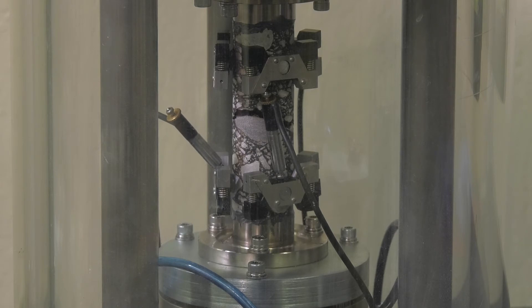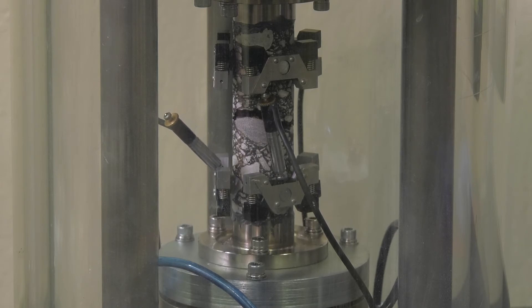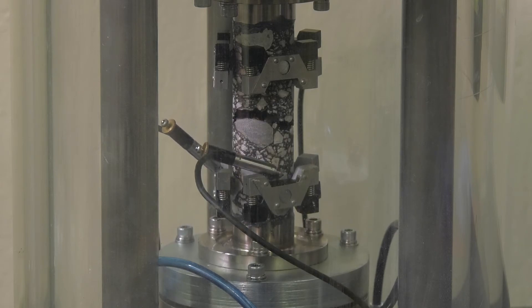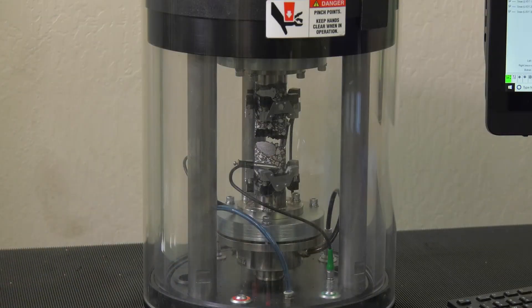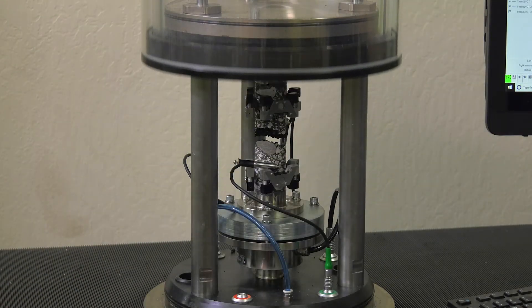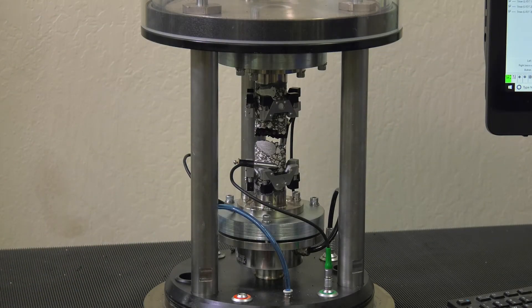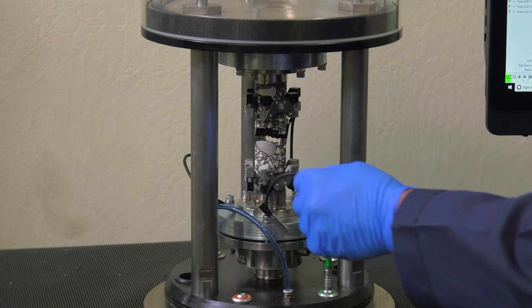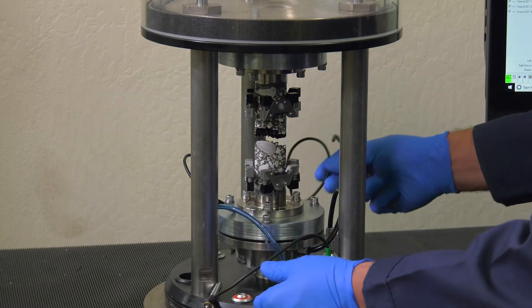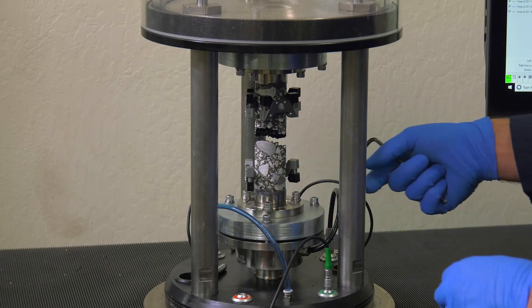The test stops automatically when the machine limits are reached or the test reaches 80,000 cycles. Once the test is complete, open the AMPT conditioning chamber, remove the LVDTs, and lower the actuator if necessary.